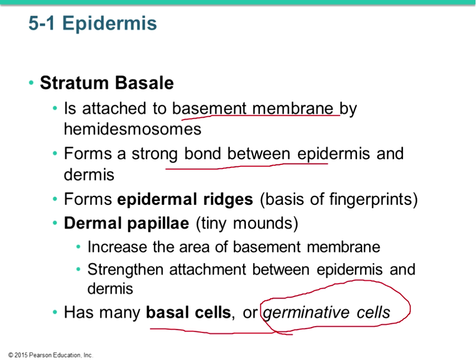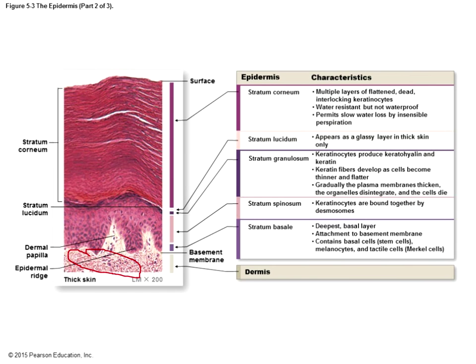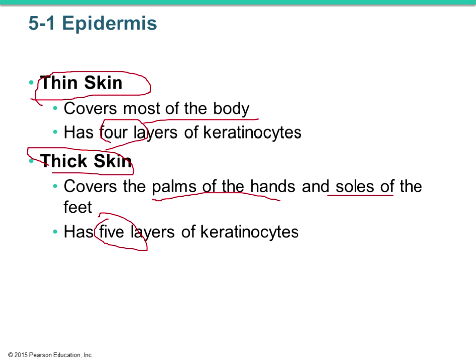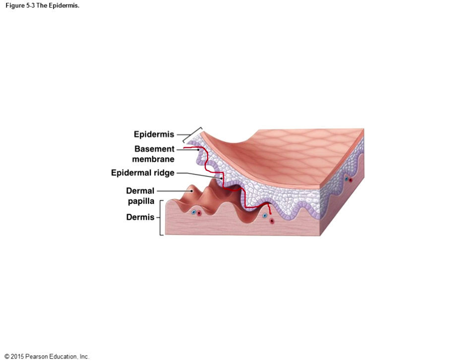The connection between epidermis and dermis consists of epidermal ridges that attach to dermal papillae. The purpose of these dermal papillae — mound-like projections creating an undulating line of connection — is to increase the surface area of the basement membrane and thereby strengthen the attachment between the epidermis and dermis.